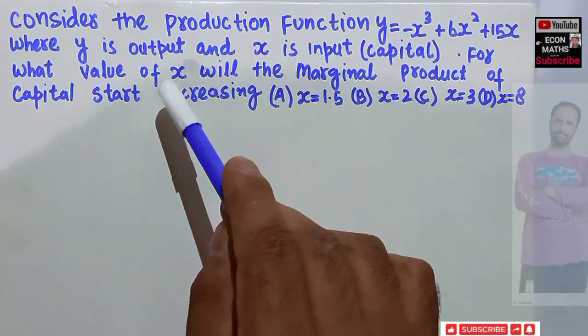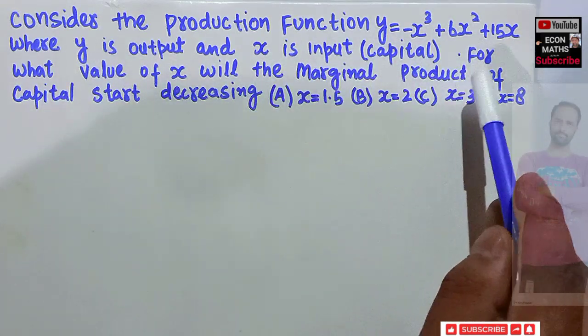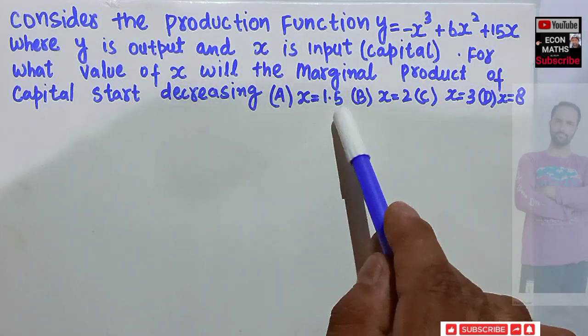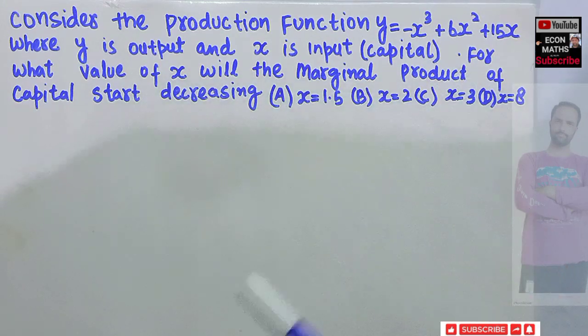For what value of x will the marginal product of capital start decreasing? The options are: (A) x = 1.5, (B) x = 2, (C) x = 3, or (D) x = 8.